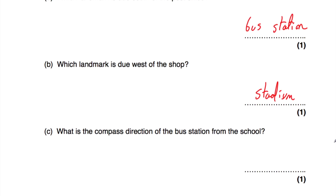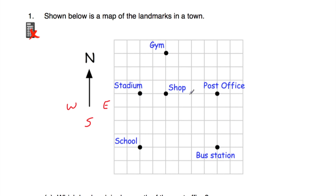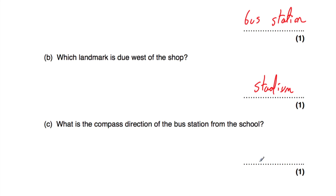The next part says what is the compass direction of the bus station from the school? So we're at the school, because it's from the school. If we go to the school and we want to get to the bus station, we go this way — that's the compass direction — and as you can see that would be east.